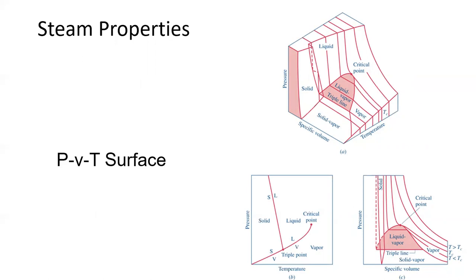Now for steam table review: the PVT surface can be viewed as TS, TV, PV, and PT diagrams — each is a different 2D view of the same 3D surface. On a TS diagram, you have the saturated liquid line going up to the critical point and the saturated vapor line coming down. Below that is the solid-vapor region where you can sublimate — go directly from solid to vapor. Review all these diagrams because the FE exam may test you on a PV diagram or a TS diagram.